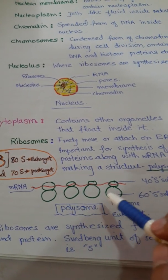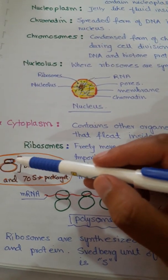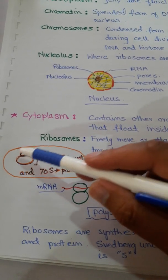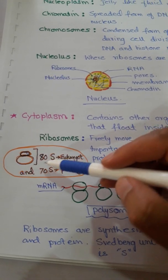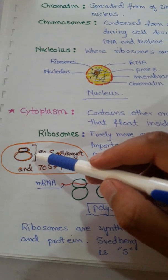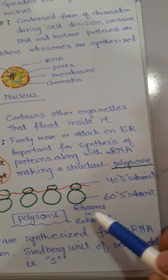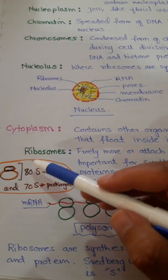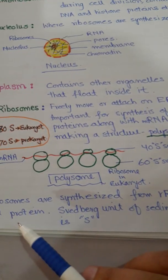A polysome is an mRNA molecule attached with several ribosomes. The ribosome structure contains two subunits: a smaller subunit and a larger subunit. In eukaryotic cells, the whole ribosome is 80S (S means Svedberg unit, a sedimentation unit). In prokaryotes, the ribosome is 70S. The smaller subunit is 40S and the larger is 60S in eukaryotes, making a total of 80S. Ribosomes are synthesized from ribosomal rRNA and proteins.